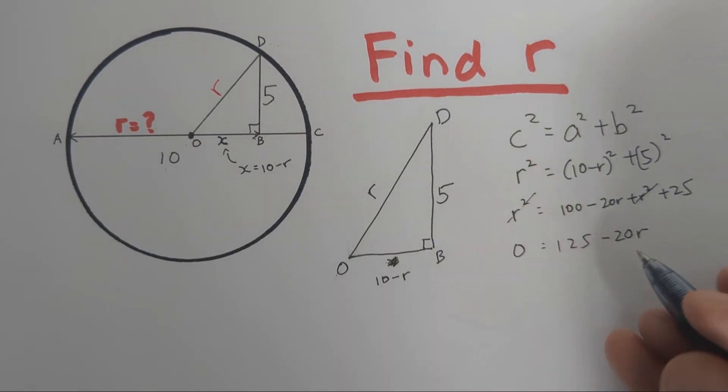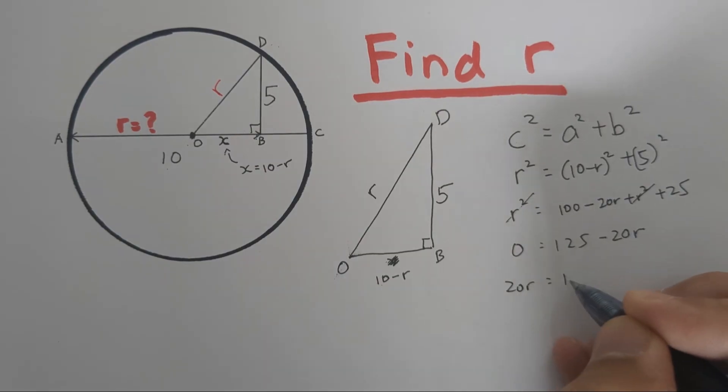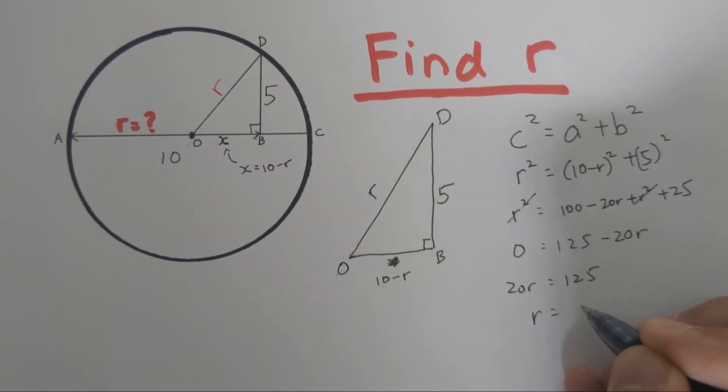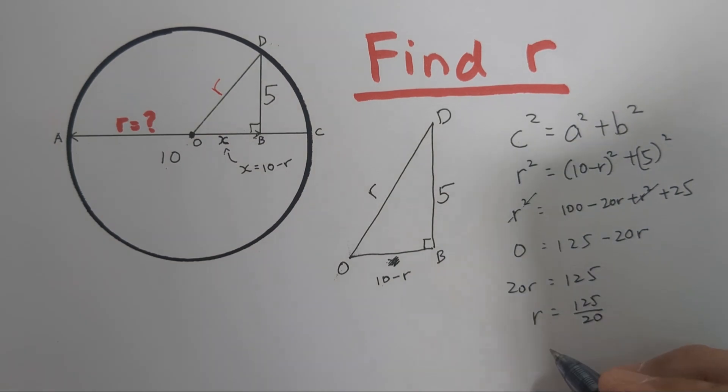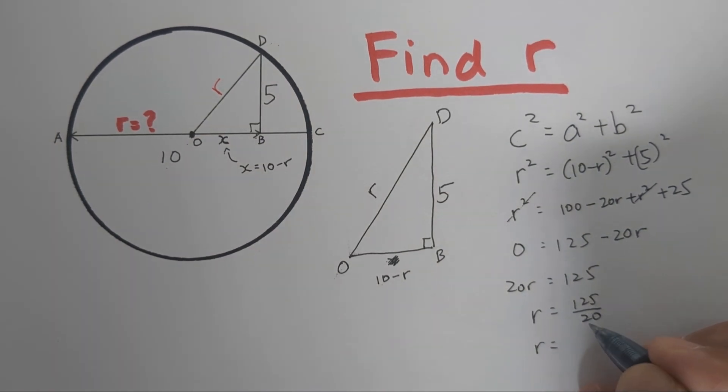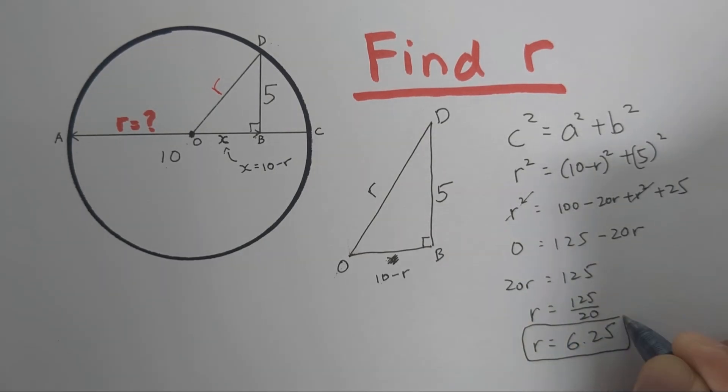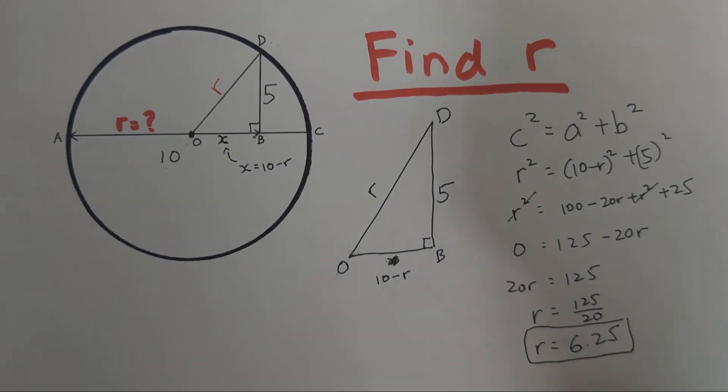Move 20R to the left side. We have R equals 125 divided by 20. R will be 6.25. We have the radius.